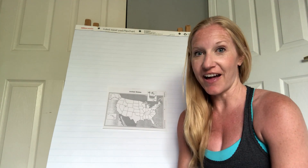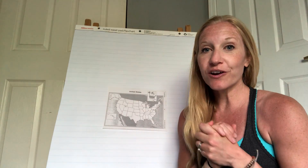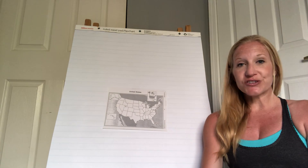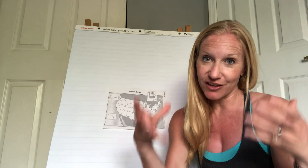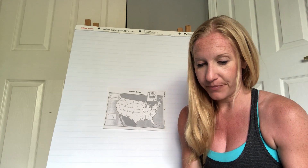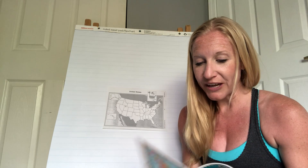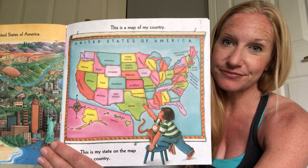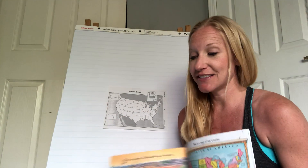Hi boys and girls of room 5. We are going to continue doing our Me on the Map book. Last week we started in our own bedrooms on our own street, then worked up to the city of Concord, then the great state of California. Next in our Me on the Map book we take it out a step further to our country, and our country is the United States of America.